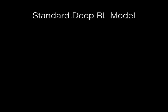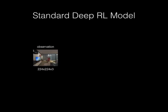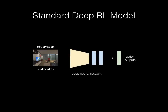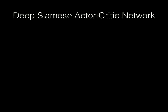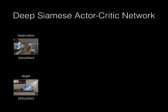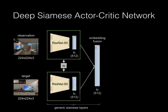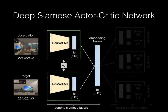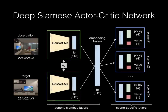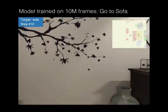Standard deep reinforcement learning methods take only the observation as input, and therefore need to be retrained for new goals. In contrast, our model learns a function of both the current observation and the target, eliminating the need for retraining and enabling generalization across targets and scenes.